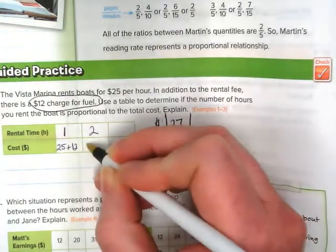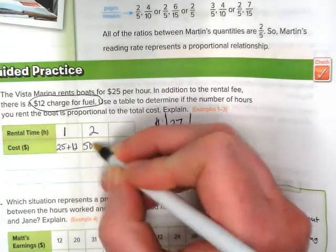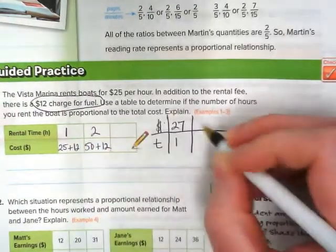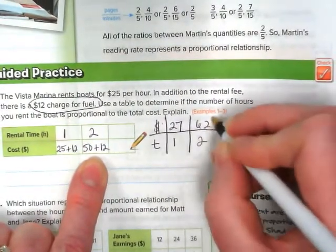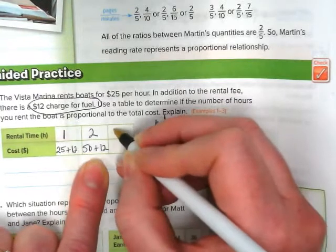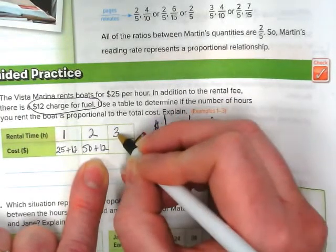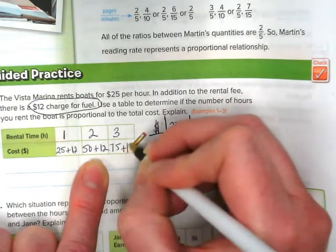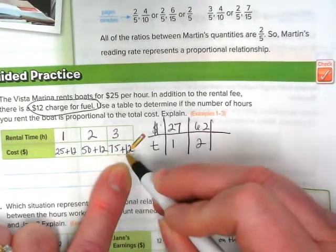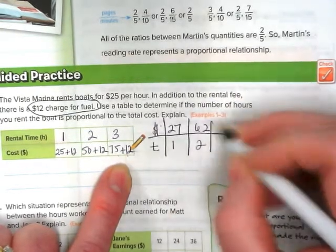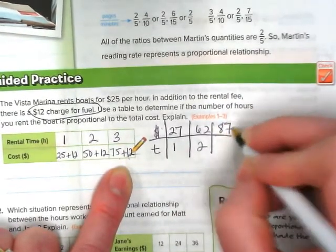For two hours, it would be $50 plus the $12 fee. 50 plus 12 would be 62 over 2. And for three hours, 3 times 25 would be 75 plus 12, and we would get 75 plus 12 would be 87 over 3.